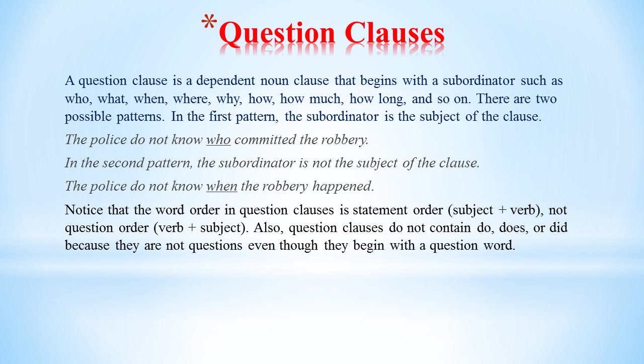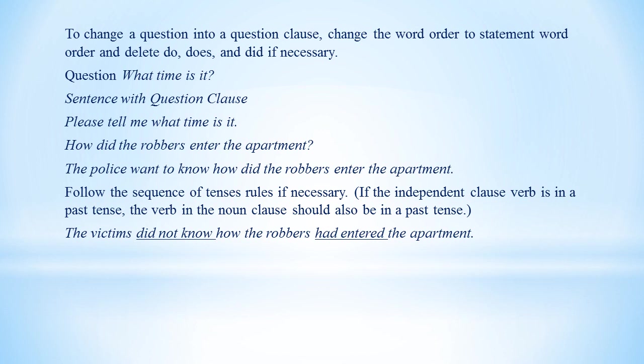Also, question clauses do not contain do, does, or did because they are not questions, even though they begin with a question word. To change a question into a question clause: change the word order to statement word order and delete do, does, and did if necessary. For example: Question: 'What time is it?' Sentence with question clause: 'Please tell me what time it is.' 'How did the robbers enter the apartment?' becomes 'The police wanted to know how the robbers entered the apartment.' Follow the sequence of tenses rules if necessary — if the independent clause verb is past tense, the noun clause verb should also be past: 'The victims did not know how the robbers had entered the apartment.'